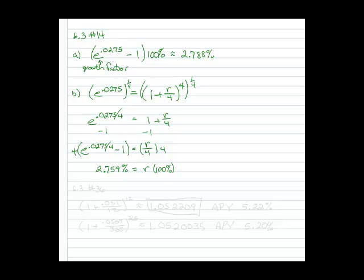The other one we had in the summer quiz was number 36, also from 6.3. In 36, we were given two different rates and asked to compare them. We had a 5.1% compounded monthly and 5.07% compounded daily.